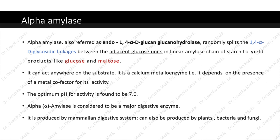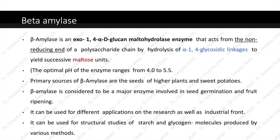Alpha amylase is a calcium metalloenzyme, meaning it depends on the presence of a metal cofactor for its activity. The optimum pH for activity is found to be 7. Alpha amylase is considered to be a major digestive enzyme; it is produced by the mammalian digestive system and can also be produced by plants, bacteria and fungi. Beta amylase is an exo-1,4-α-D-glucan maltohydrolase enzyme that acts from the non-reducing end of a polysaccharide chain by hydrolysis of alpha-1,4 glycosidic linkages to yield successive maltose units. The optimal pH of the enzyme ranges from 4 to 5.5.